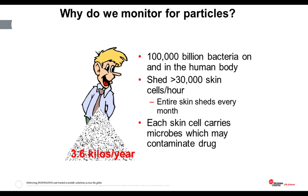Those involved in routine environmental monitoring will notice that we actually monitor particles in the air, not bacteria. The reason is that the biggest challenge for contamination is the workers present in the clean rooms. The average human being has around 100,000 billion bacteria on and inside their body, and we shed over 30,000 skin cells per hour. In fact, we shed and replace our entire skin every month. Each of these skin cells is smaller than the human eye can see, but carries many microbes which could contaminate pharmaceutical products. We shed somewhere in the region of 3.6 kilos of skin cells per year.